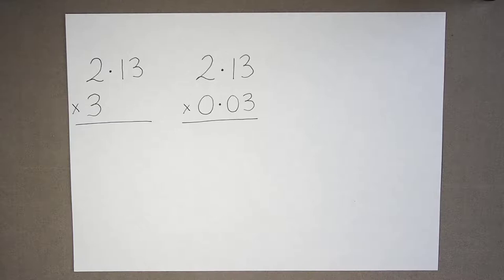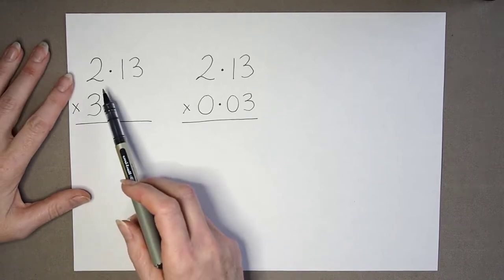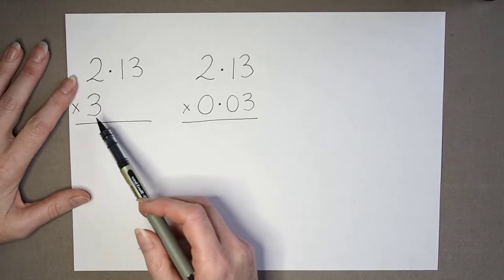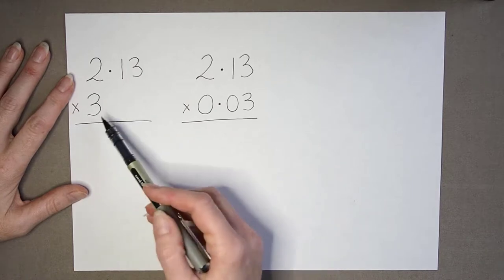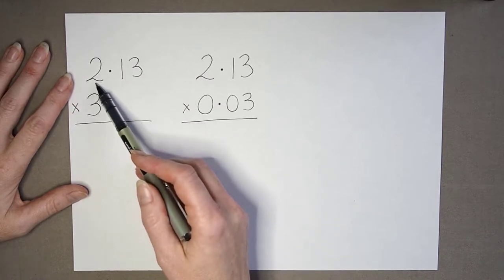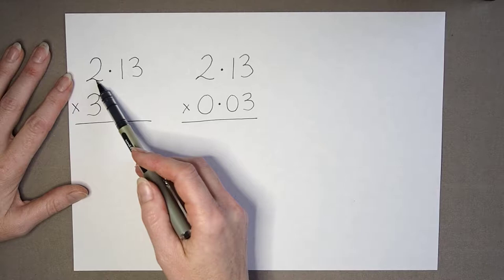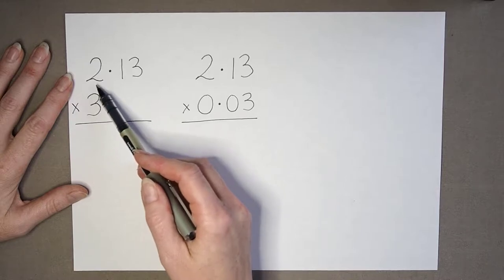When multiplying decimals, pupils can first go wrong in setting out the calculation. If they try to line up the digits as they would with column addition, they may put the 3 underneath the 2 in this calculation because they're both units.